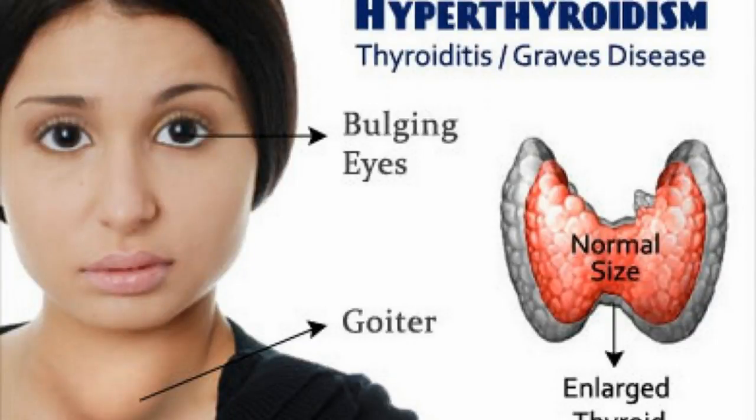Difference between Graves' disease and Hashimoto. The disorders that are due to the immune reactions mounted by the body against its own cells and tissues are known as autoimmune disorders. Graves' disease and Hashimoto are two such autoimmune disorders that affect both structure and function of the thyroid gland.